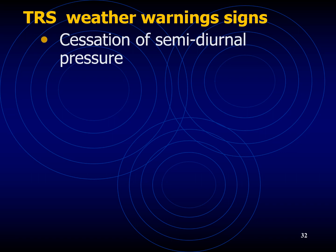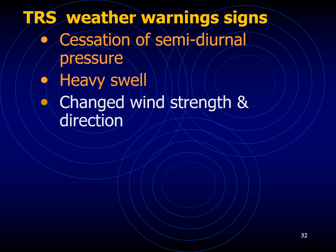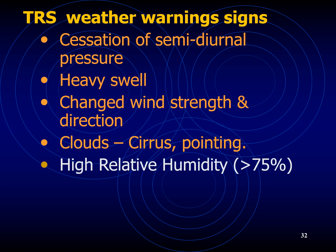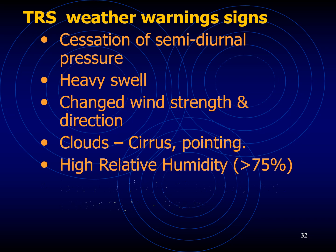The TRS weather warning signs include a cessation of semi-diurnal pressure variation — the pressure will not rise and fall but will keep falling only. There is heavy swell, changed wind direction and strength with winds becoming stronger and direction becoming unpredictable. Clouds are cirrus and pointing towards the center. Relative humidity increases to greater than about 75 percent. Initially, just before the storm, there is unusual clarity of atmosphere with remarkable visibility — this is where the saying 'a lull before the storm' comes from. Then the storm comes in with heavy precipitation, and storm warnings are issued more regularly.